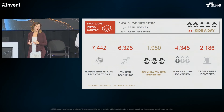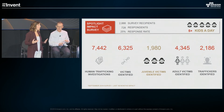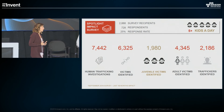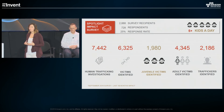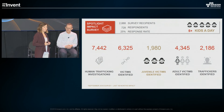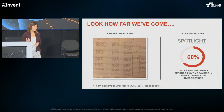To get a sense of the impact Spotlight has had — based on the last 12 months from our September 2016 survey with a 25% response rate, so we know the impact numbers are low — Spotlight is averaging helping law enforcement identify about five kids a day. It has assisted in over 7,442 trafficking investigations, with a total of 6,325 victims identified, including close to 2,000 children — which is our sweet spot — over 4,345 adult victims, and 2,186 traffickers or pimps. So it's pretty significant.